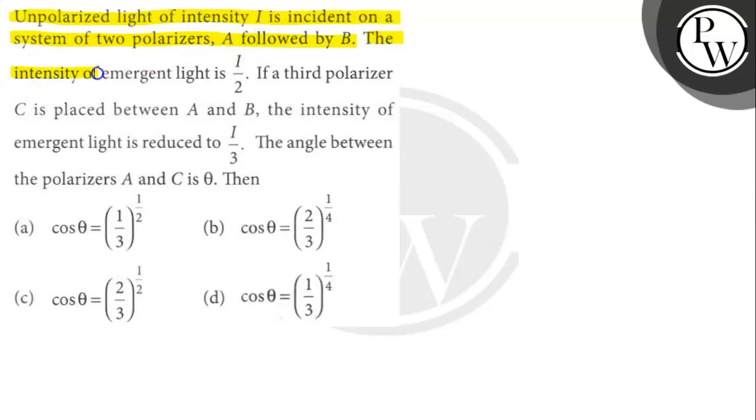The intensity of emergent light is I by 2. If a third polarizer C is placed between A and B, the intensity of emergent light is reduced to I by 3. The angle between the polarizers A and C is θ. Then what will be the answer?